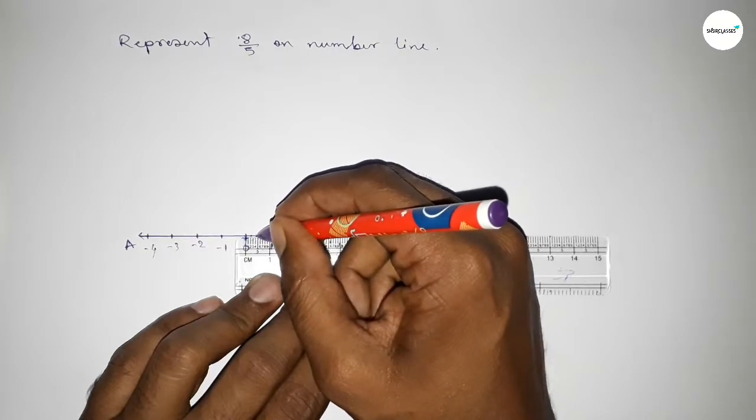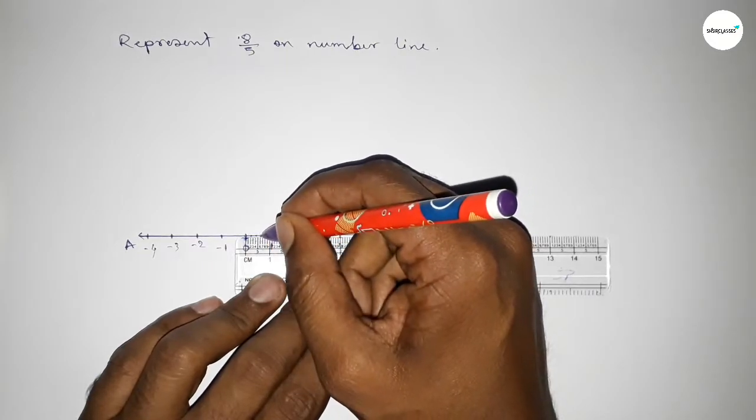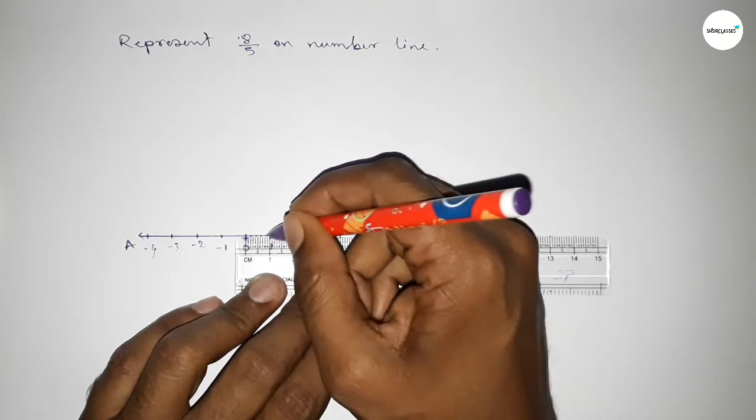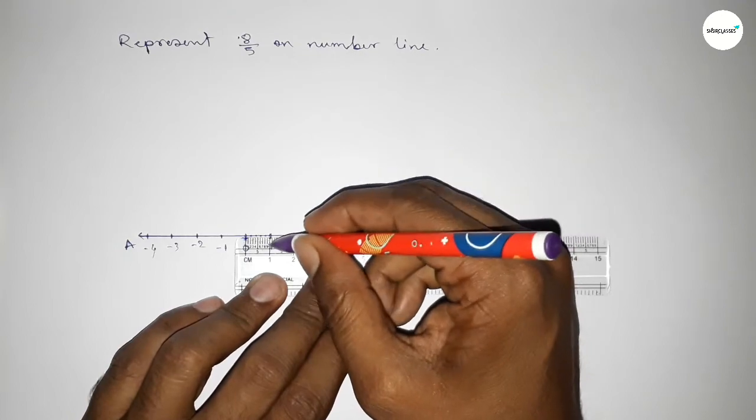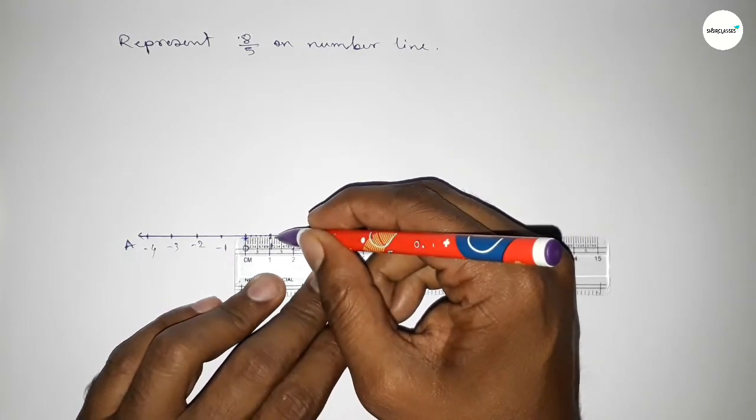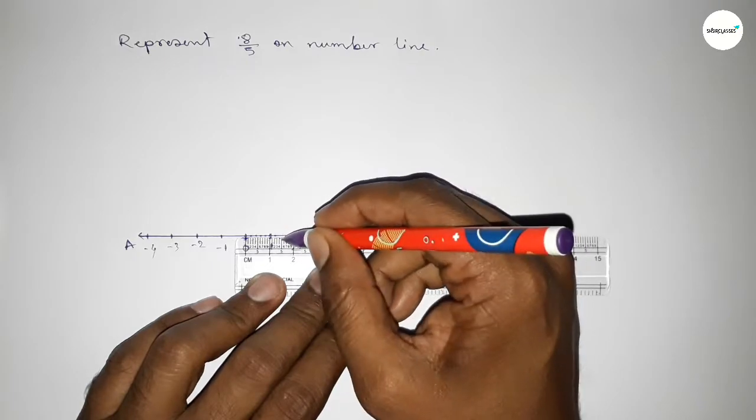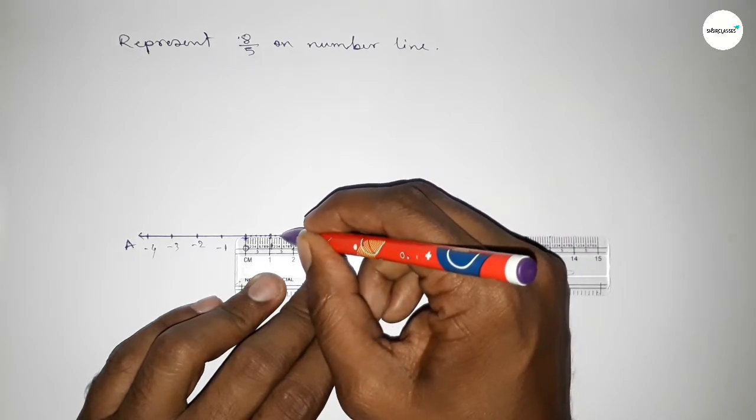Similarly, dividing the distance between 1 to 2 into 5 parts. The first is 0.2, the second is 0.4, the third is 0.6, and the fourth is 0.8.